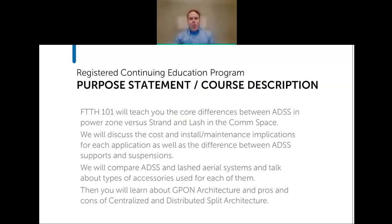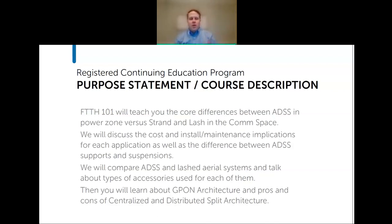What we're discussing today are the basic decisions that need to get made if you're a utility or electric cooperative looking to do fiber to the home. Specifically, we'll look at where to physically put the fiber: ADSS in the supply zone, strand and lash in the communication zone, underground cable options, and GPON architectures—specifically the difference between centralized split and distributed split design.